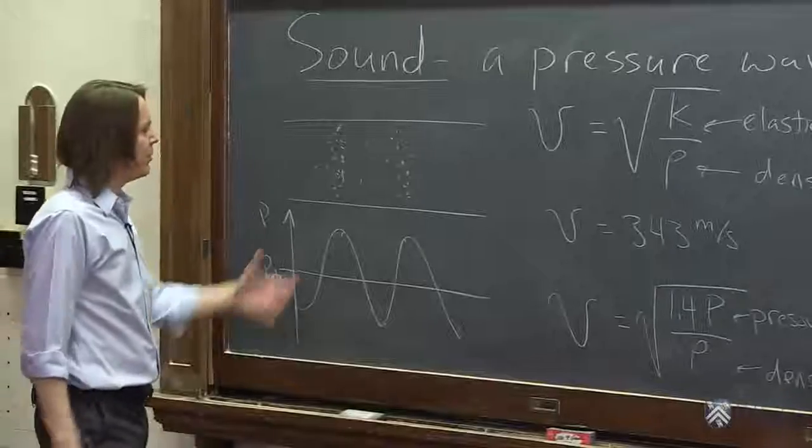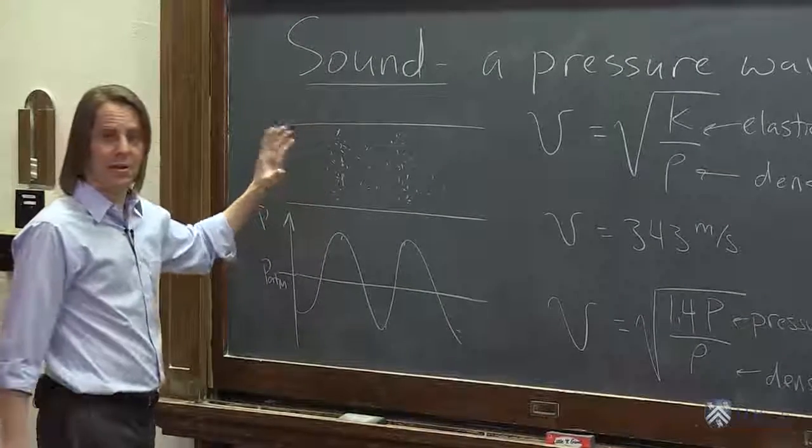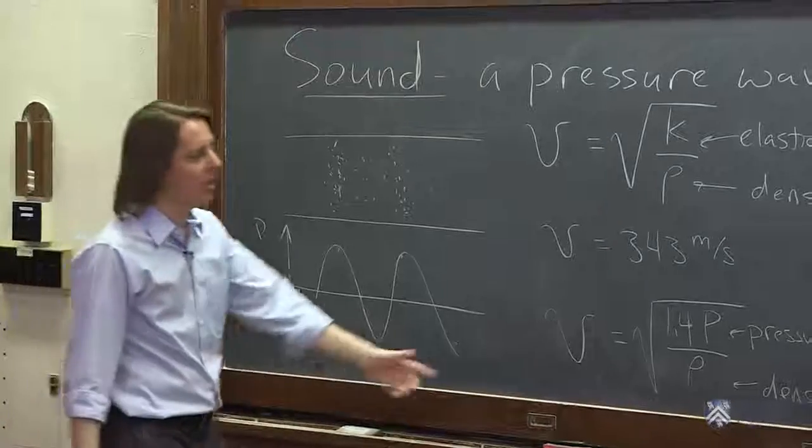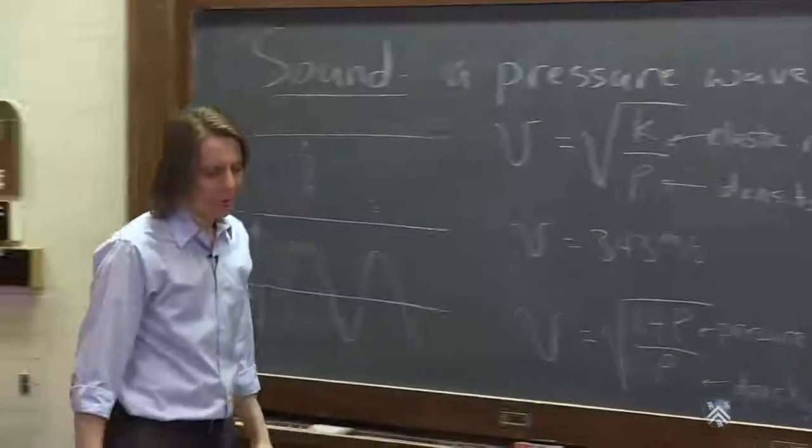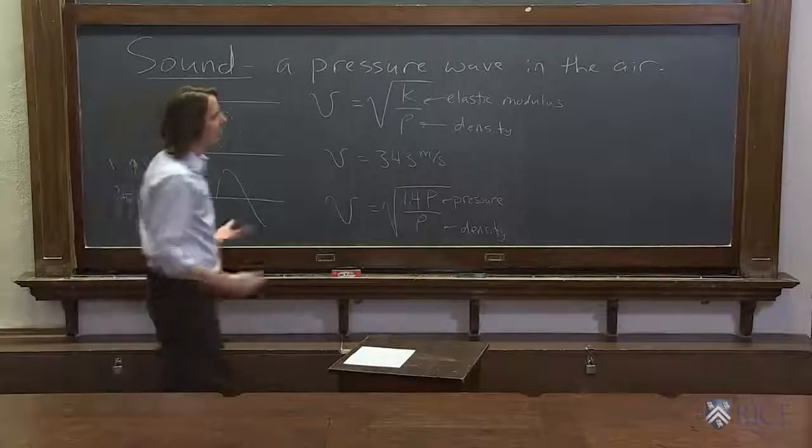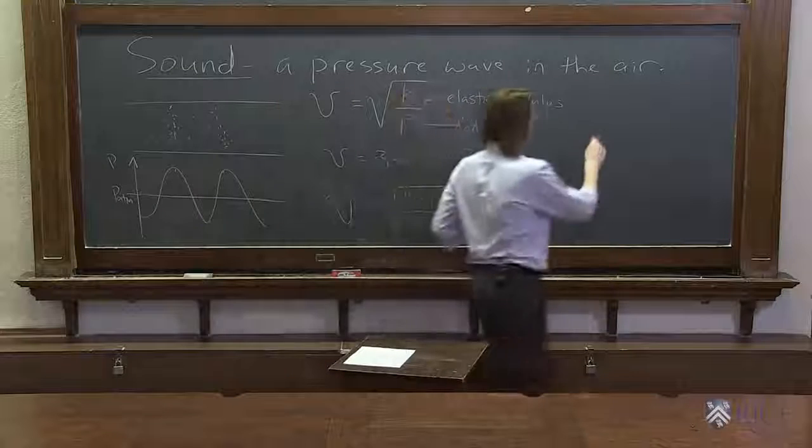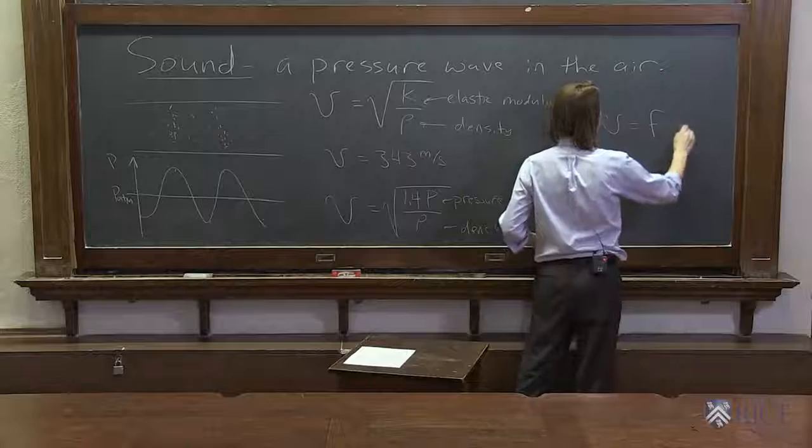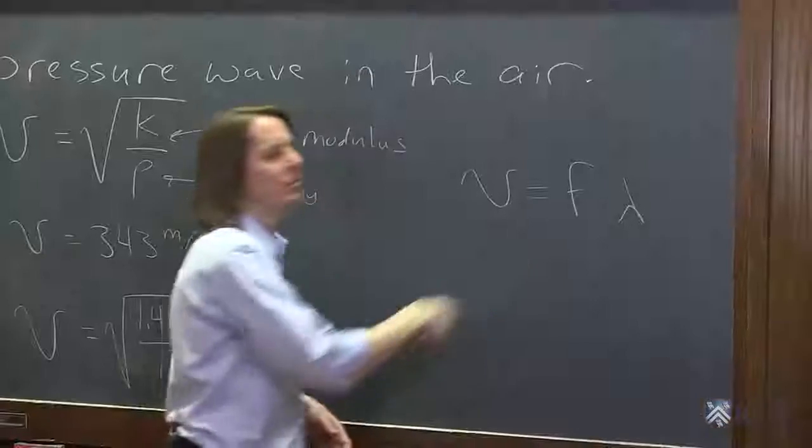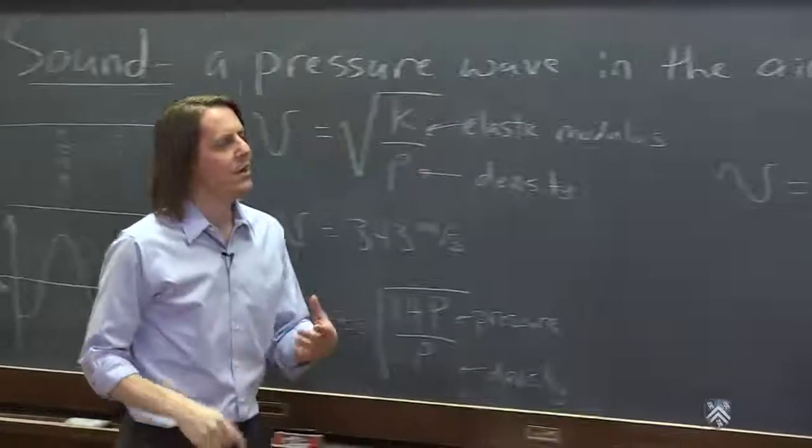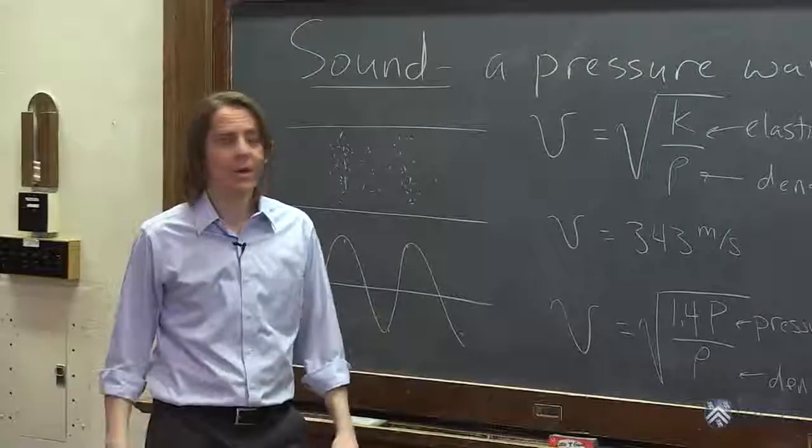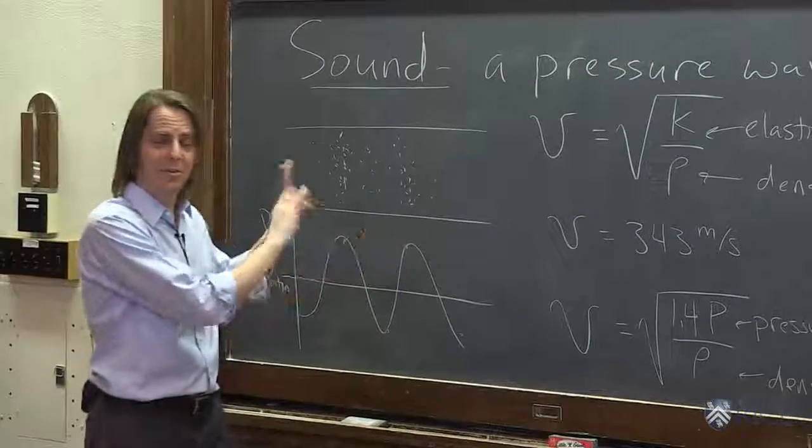All right, so maybe you can imagine that if the pressure were higher of the air, if you raise the air pressure, the sound goes a little bit faster. Not a lot faster, it's under the square root, but it goes a little bit faster. And all of this, these velocities also still obey velocity of a sound wave equals the frequency times the wavelength. So you could measure the speed of sound also by measuring this wavelength at a certain frequency if you wanted to. Okay, so that's the basics of sound, just a pressure wave in the air.